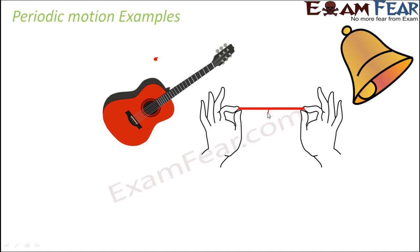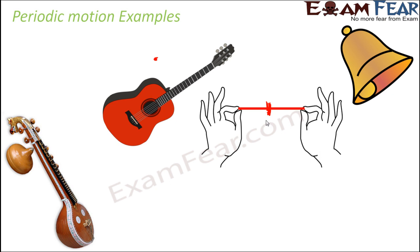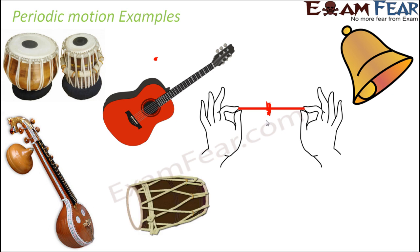Take a rubber band, stretch it, and pluck it in the middle — it starts vibrating, and that is again periodic motion. Many musical instruments exhibit periodic motion — like the tabla, the dholak — these are all different instruments where you can experience periodic motion in the form of vibration, because vibration is nothing but periodic motion. The flute is another example. These are all different examples which exhibit periodic motion.